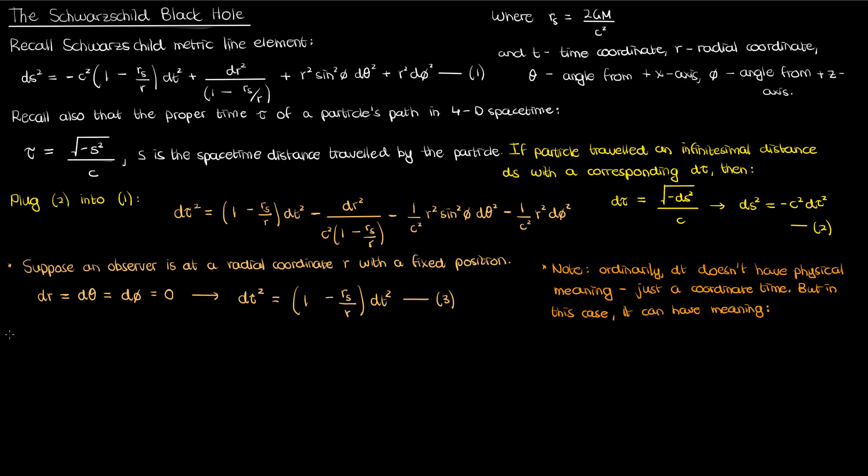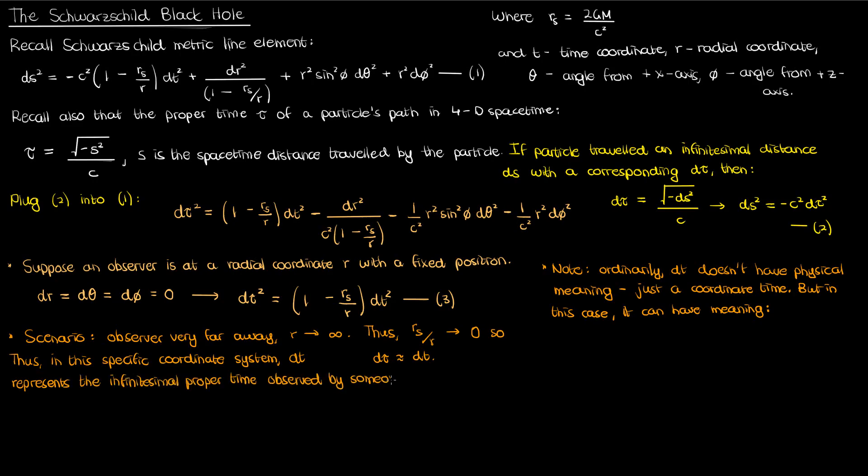To do this, we'll analyze this equation by looking at a particular scenario. In this scenario, I'll suppose that my observer is really far away from my mass m, so their r coordinate approaches infinity. This means that as r approaches infinity, rs over r approaches 0, and so d tau is approximately equal to the coordinate time differential dt. So with this little analysis, we can infer that in this specific coordinate system, the differential in the time coordinate dt represents the proper time measured by an observer at infinity.